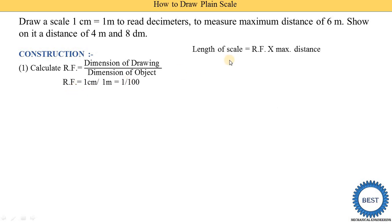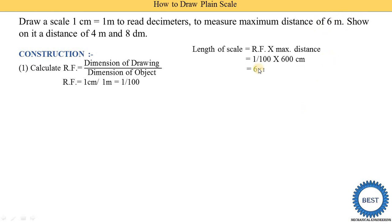Next, we find out the length of scale. The equation is: length of scale equals representative fraction multiplied by maximum distance. The RF is 1 upon 100 and maximum distance is 6 meters. Converting 6 meters to centimeters: 6 into 100 equals 600 centimeters. If you don't know how to convert units, I have already made a separate video on units of scale — the link is in the card or description. So the length of scale is 600 divided by 100, which equals 6 centimeters.